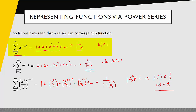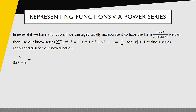So what we can see is that given this known series, we can multiply by values and make substitutions to generate series for new functions. In application, we want to start with a new function and work backwards to the series. In general, if we can algebraically manipulate a function to have the form of something over 1 minus something — since the function we know the series for is 1 over 1 minus x — then we can modify the series to find the series for the new function.